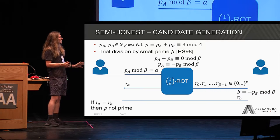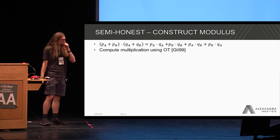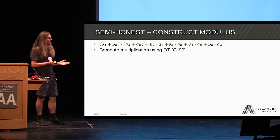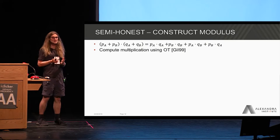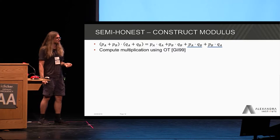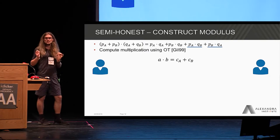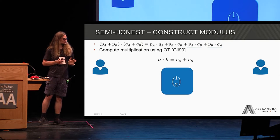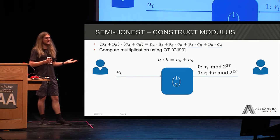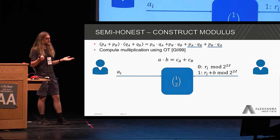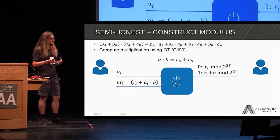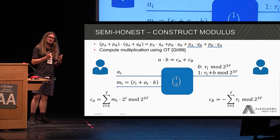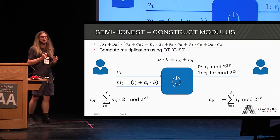Bob then computes minus PB modulo beta and sends that to Alice, who compares whether they're equal. If they are equal, then beta is actually a factor of PA + PB, meaning it's definitely not prime and the candidate is discarded. When we have something that might be prime, we want to compute the modulus N, which is the product of the sums of the shares. This can be done very efficiently using oblivious transfer by a protocol by Gilboa. The idea is that one party has one factor, the other has the other factor, and using a 1-out-of-2 OT with linearity, they create an additive secret sharing of the product.